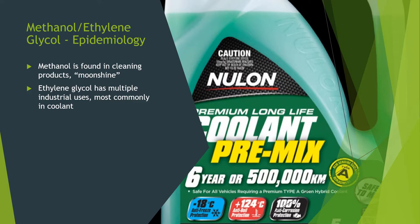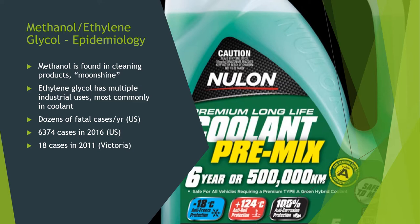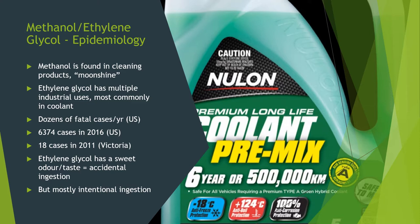Specifically looking at ethylene glycol — there are dozens of fatal cases a year in the US, with over 6,000 cases of ethylene glycol poisoning in 2016, and 18 cases within Victoria alone in 2011. Ethylene glycol has a sweet odour and taste, and its colorful appearance in coolant is the usual trigger for accidental ingestion in children. Most intentional ingestion in adults is either suicide attempts or substitution for ethanol.